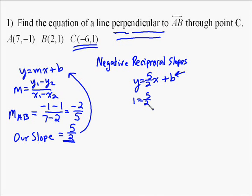5 halves times negative 6 is the first calculation. You can think of it as negative 6 over 1, which would give you negative 30 over 2. Well, negative 30 divided by 2 is negative 15.